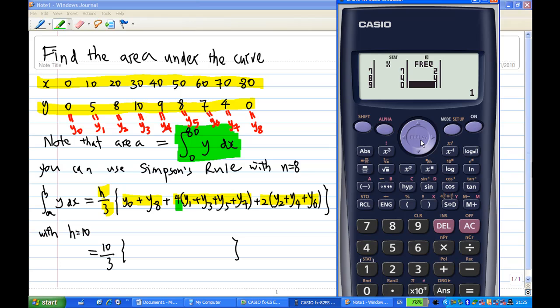And then I'm going to do a calculation using statistics. Shift, stat, which is statistic here. And then I'm going to do a sum. Number 2 is for the sum. Equal. I find that the sum is 156. So I'm going to write 156 here.